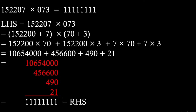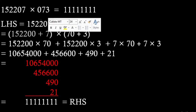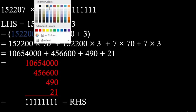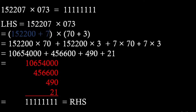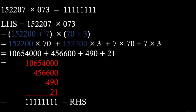The first number 152207 can be written as 152200 plus 7. The second number 73 can be written as 70 plus 3. Now applying the distributive property: we multiply 152200 once with 70 and once with 3, and we multiply 7 once with 70 and once with 3. This gives us the entire multiplication result.